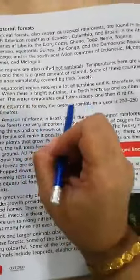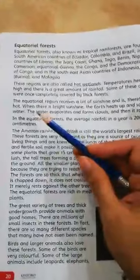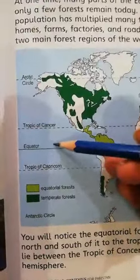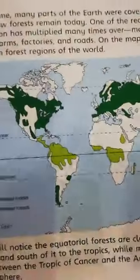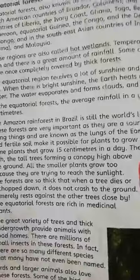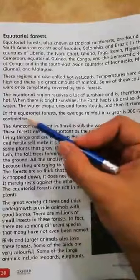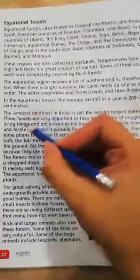The equatorial region receives a lot of sunshine and is therefore very hot. Countries near the equator have very high temperatures — the water gets hot, evaporates, and forms thick clouds, causing heavy rainfall. That is why these forests experience heavy rainfall. The average rainfall in a year in equatorial forests is 200 to 250 centimeters, which is a very high amount.